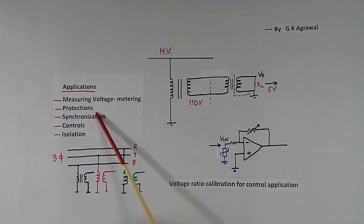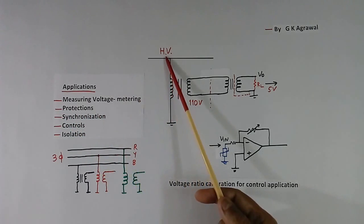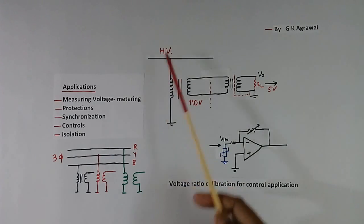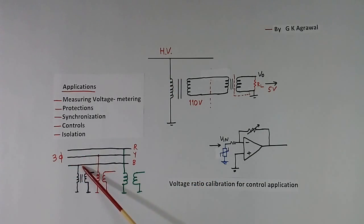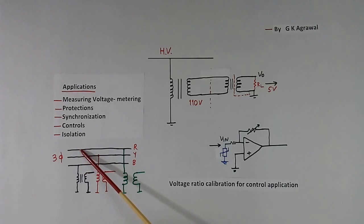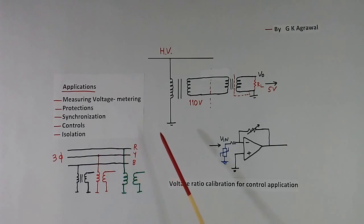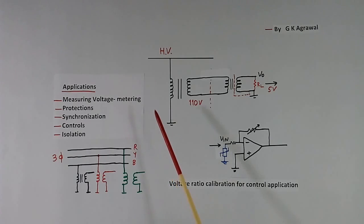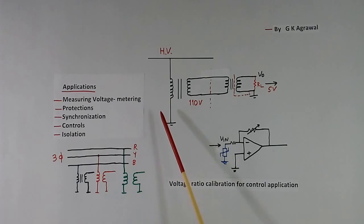Then for protection, there may be overvoltage, there may be undervoltage, and if the supply is 3-phase there may be unbalance — meaning the voltage at all 3 phases will not be equal. So we use overvoltage, undervoltage, and unbalance relays for protection purposes, and PT is required for all these relays.